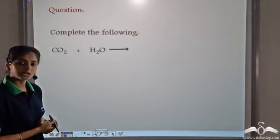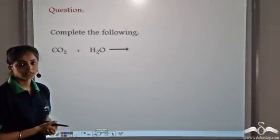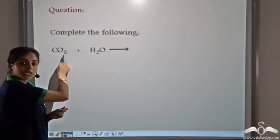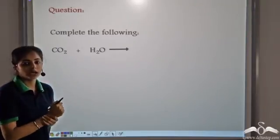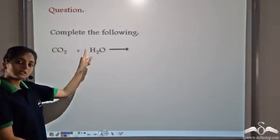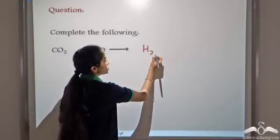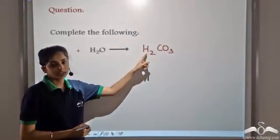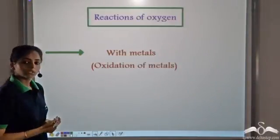Complete the reaction: we have carbon dioxide made to react with water. We know that whenever a non-metallic oxide is made to react with water, it forms the corresponding acid. In this case, carbon dioxide reacting with water gives the corresponding acid H₂CO₃, that is carbonic acid.